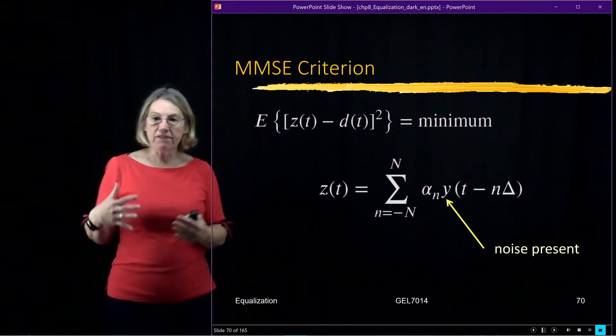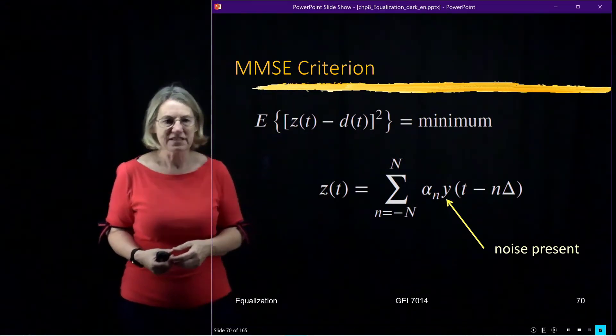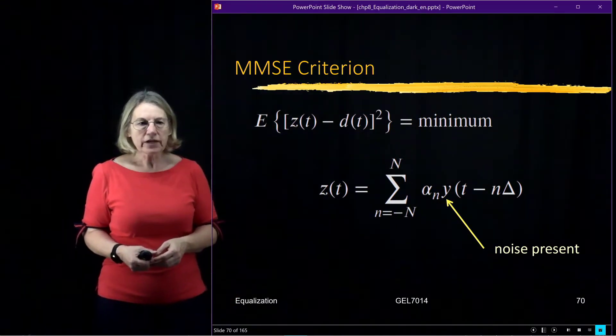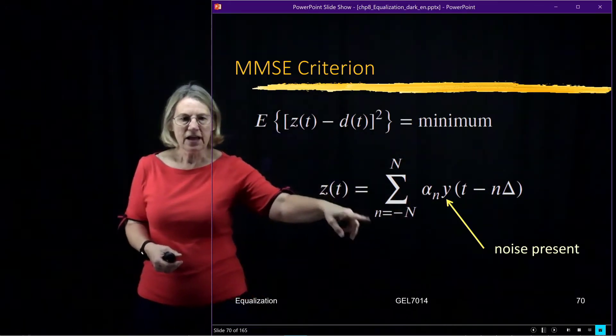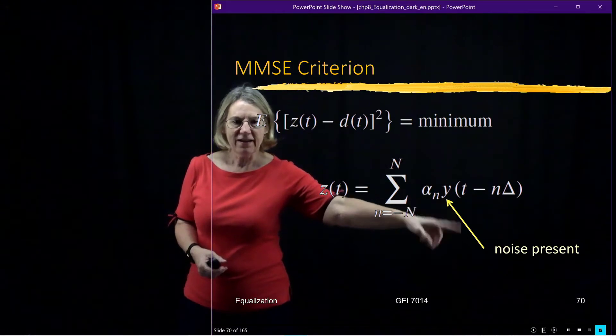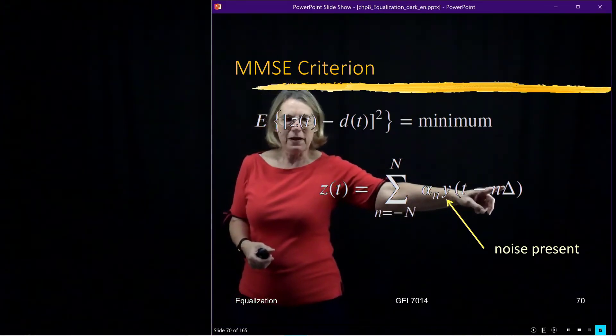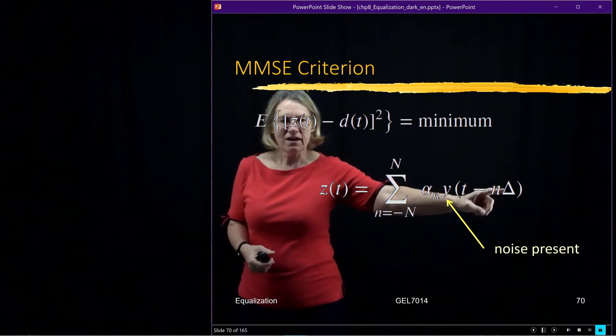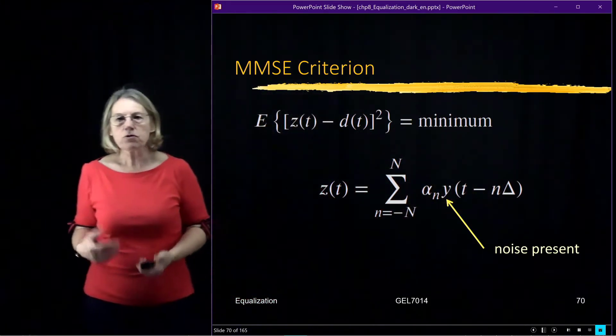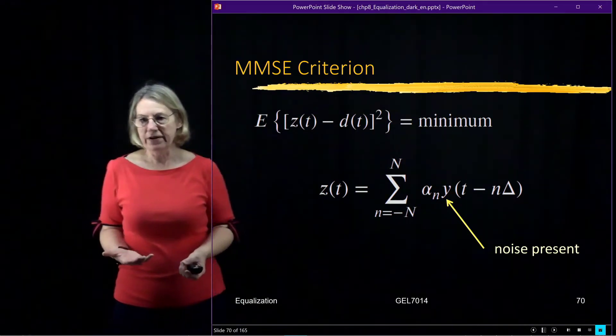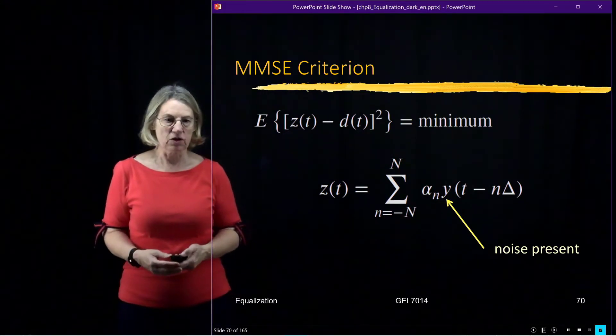So we're going to have a finite length filter. And the filter here is 2N plus 1 taps in this example. And we're looking for the coefficients in this filter. And remember, it's the Y that has the noise present. We'll just say that there's some spacing between the taps in the equalizer. And in most applications, this delta operator is just the symbol interval. But of course, there are other options available to us also.